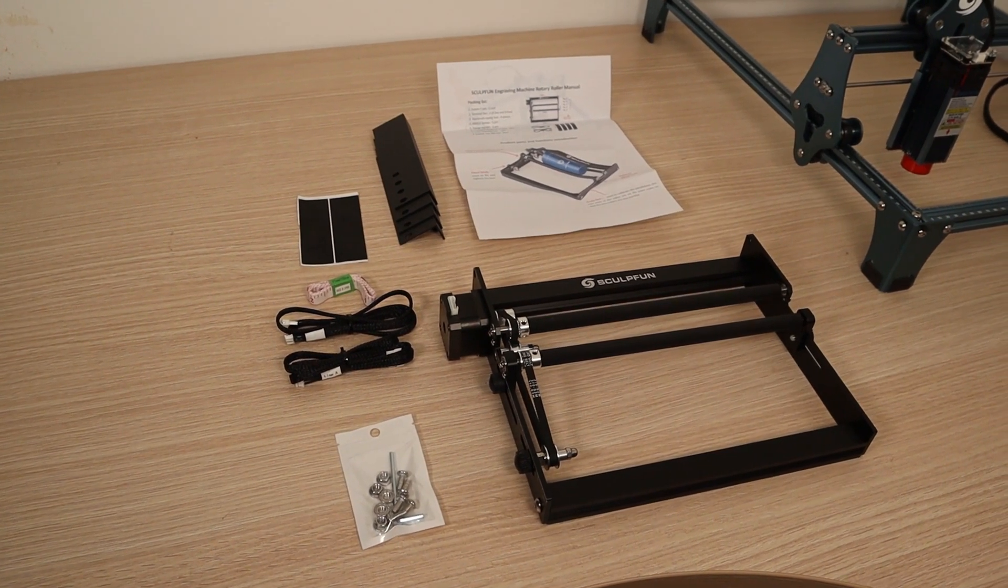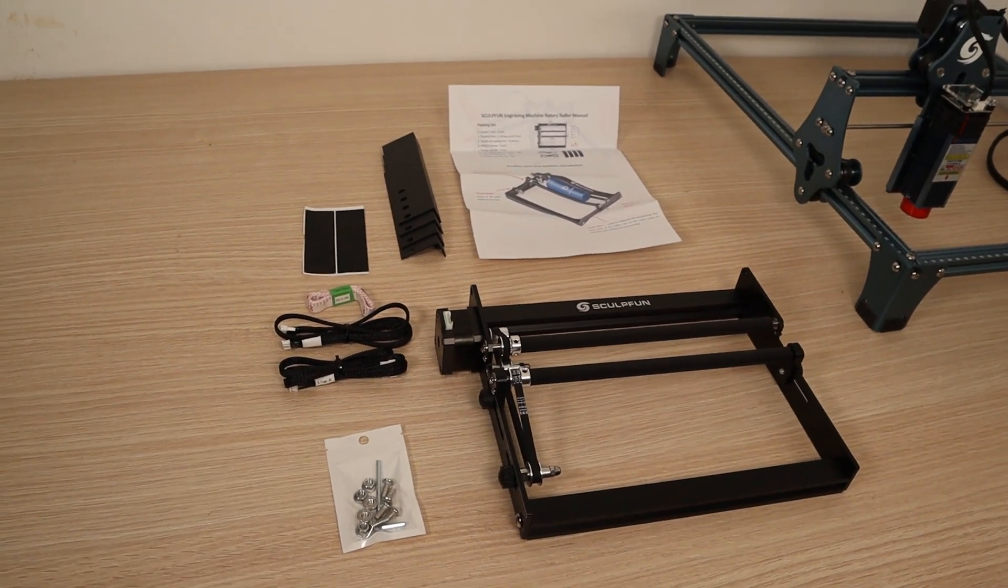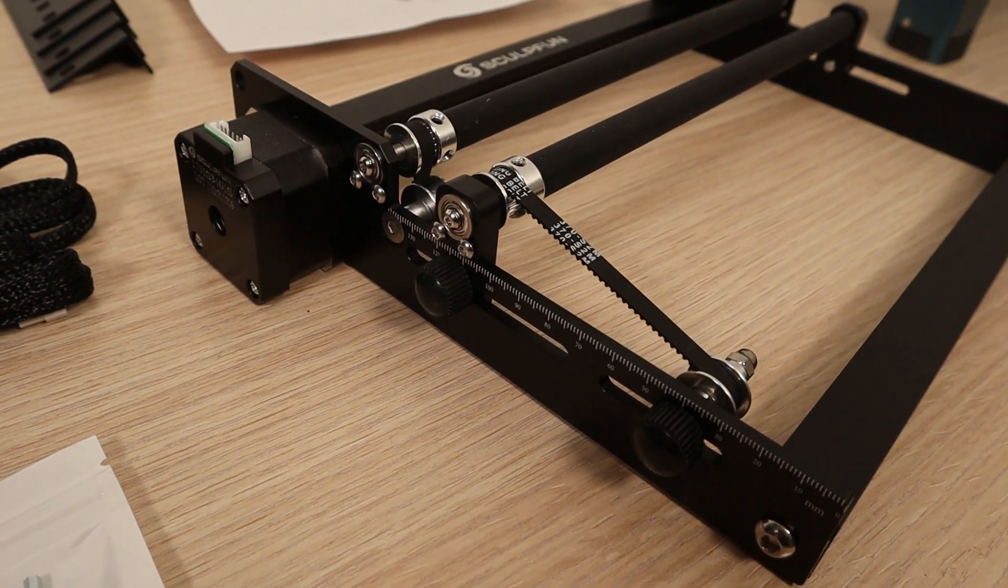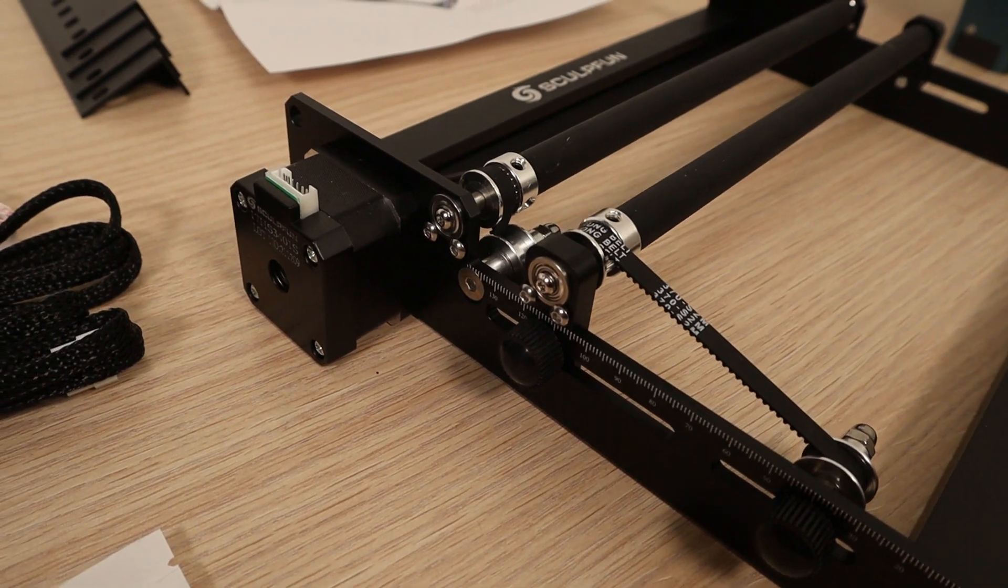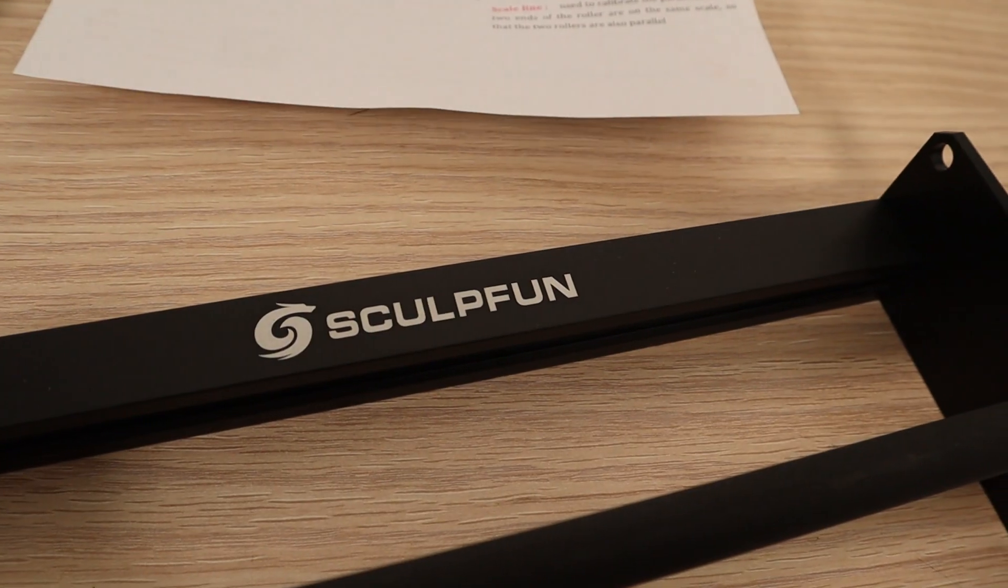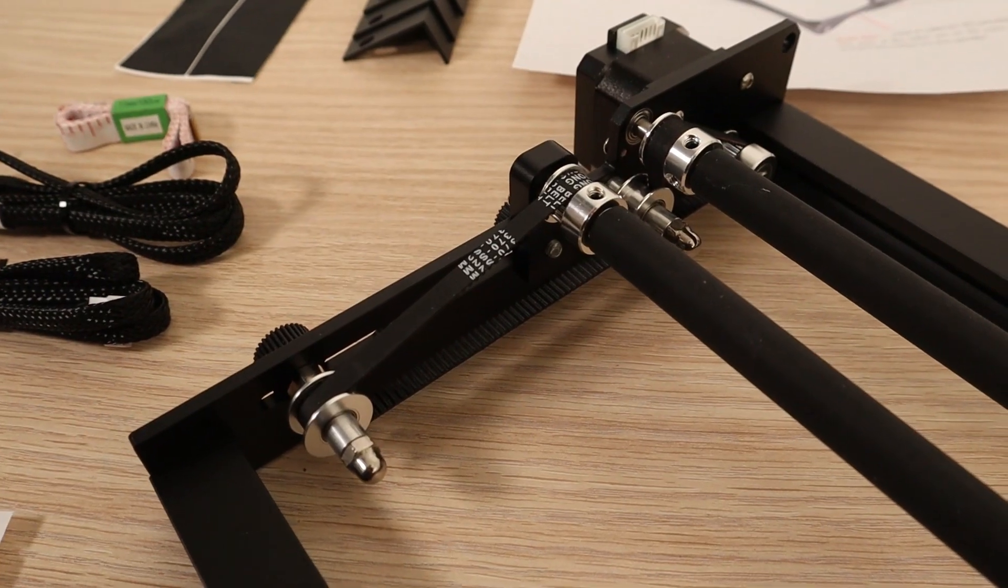The Sculpt Fun has finally released its own version of the rotary roller attachment for use with their laser engravers. But the attachment can also be used with Atomstack, Ortur, and NEJE laser engravers and other similar machines. The attachment is large, very well built, and highly adjustable.